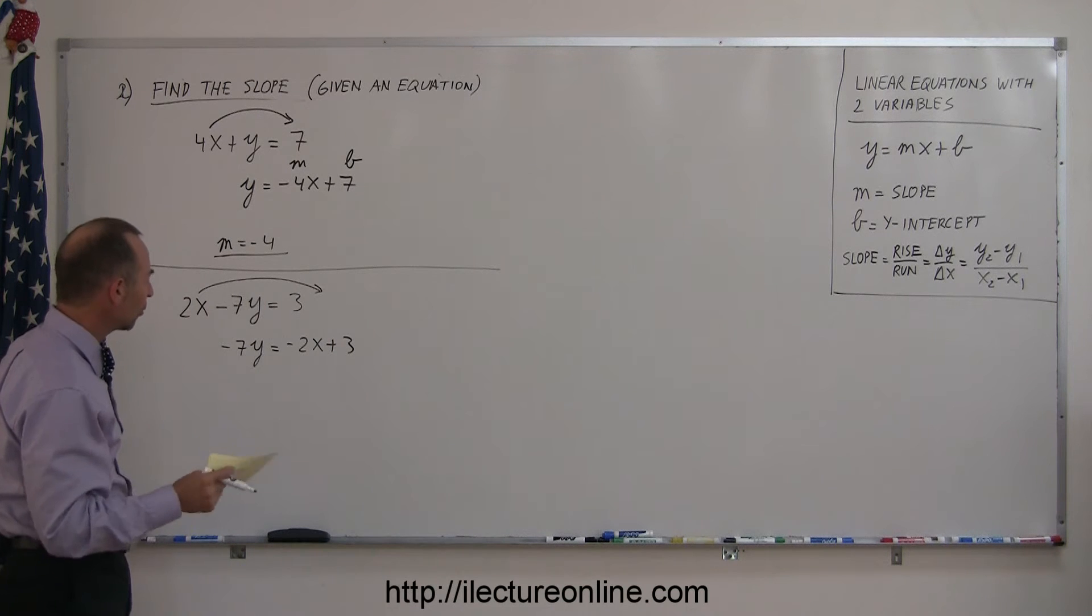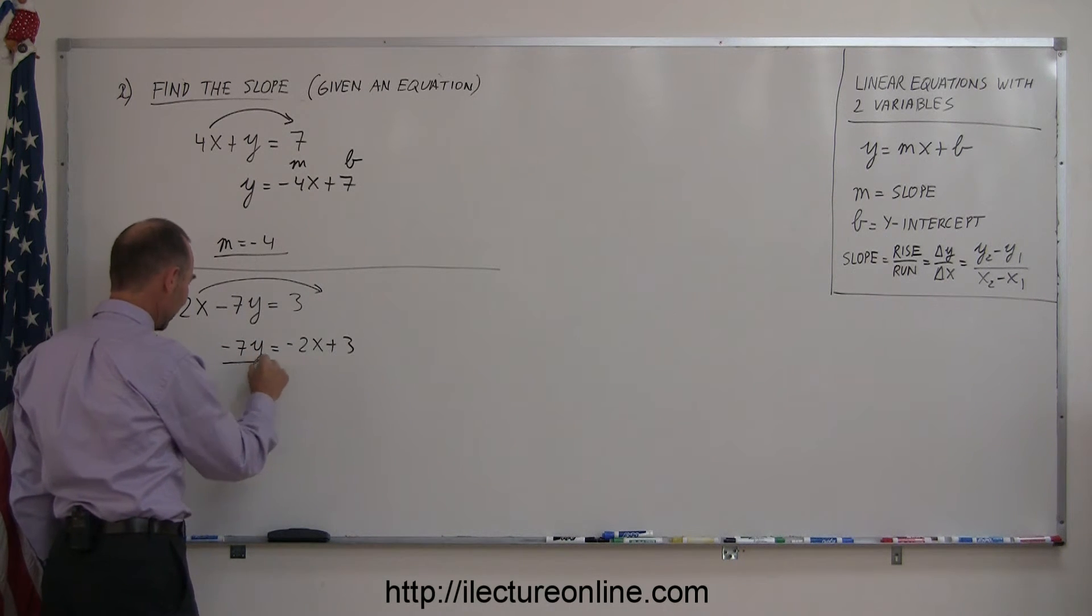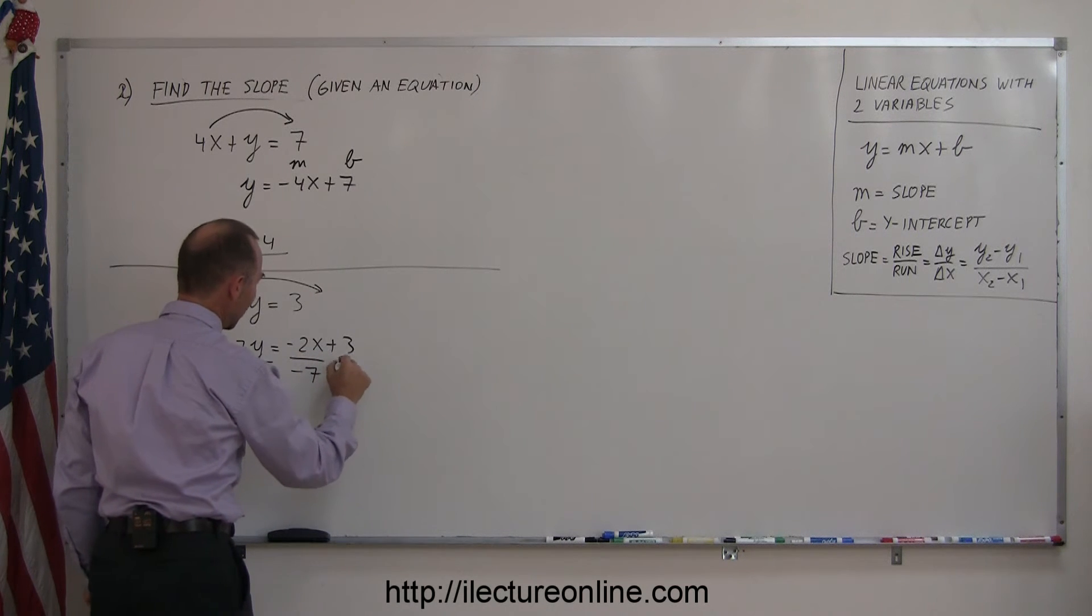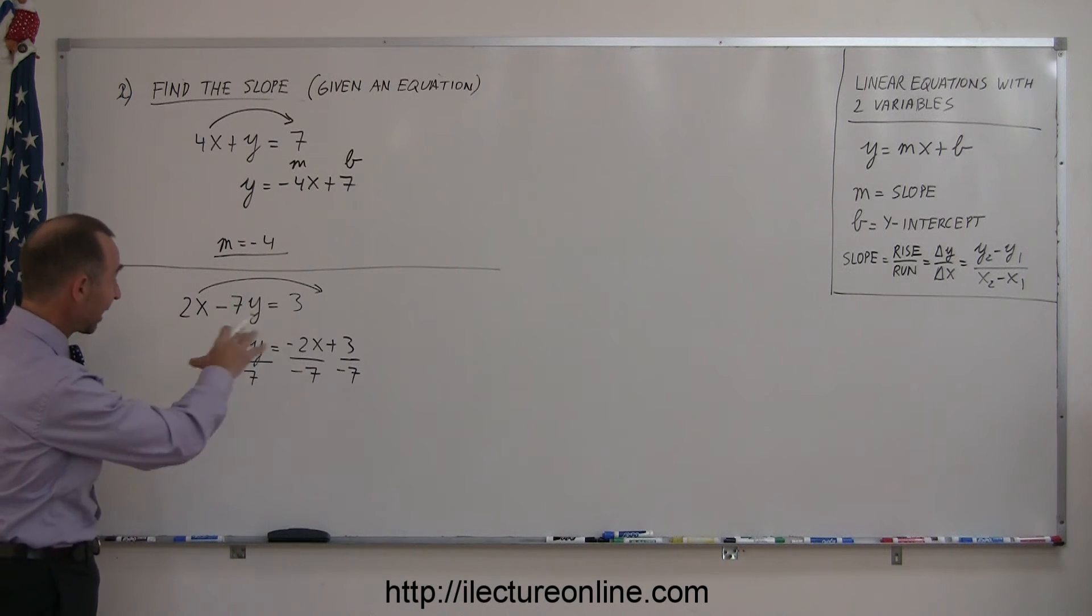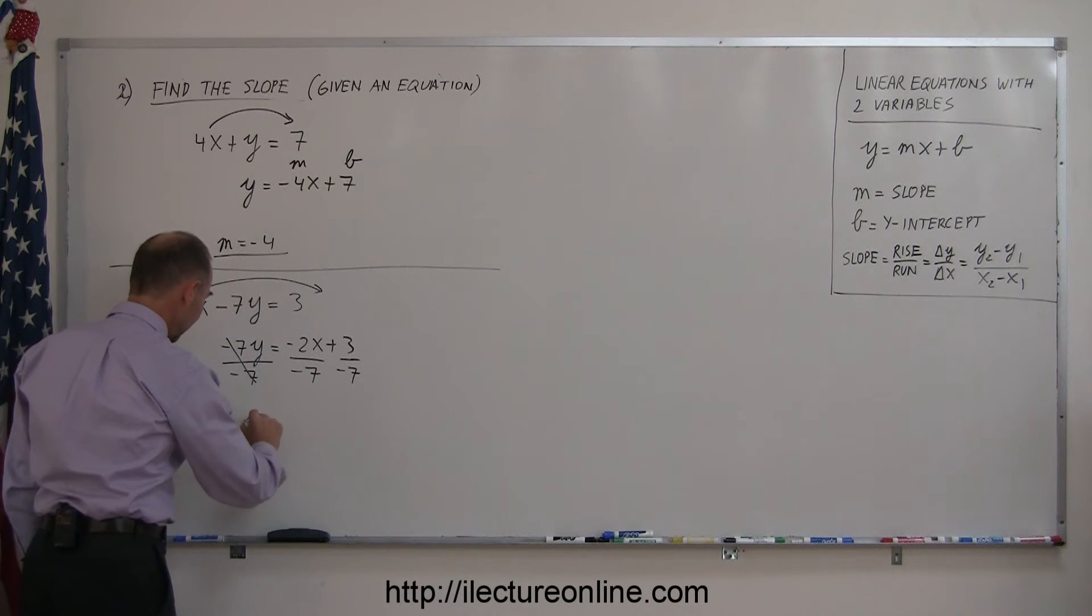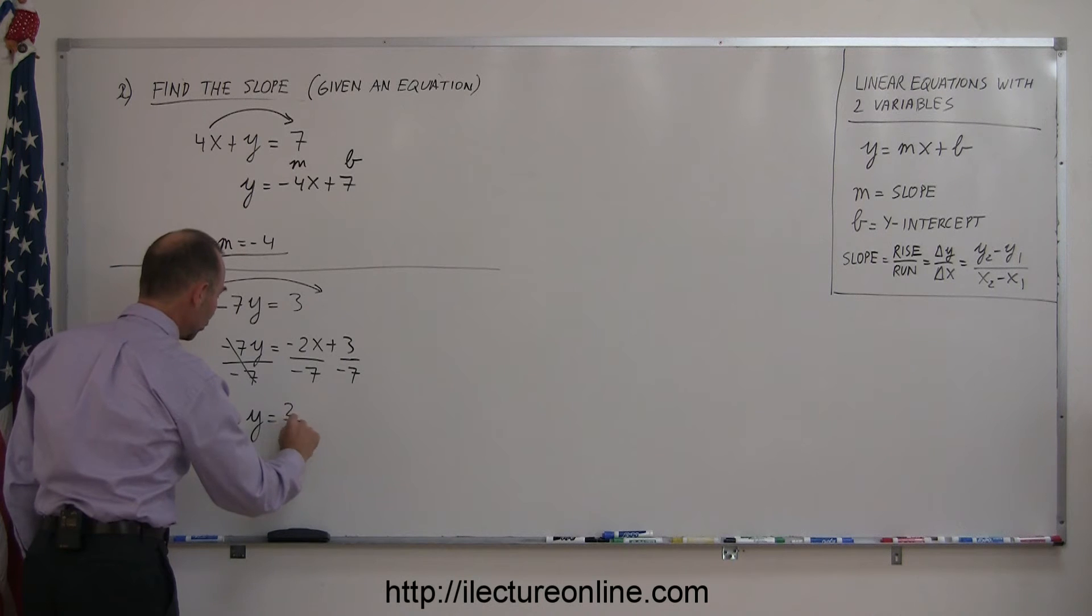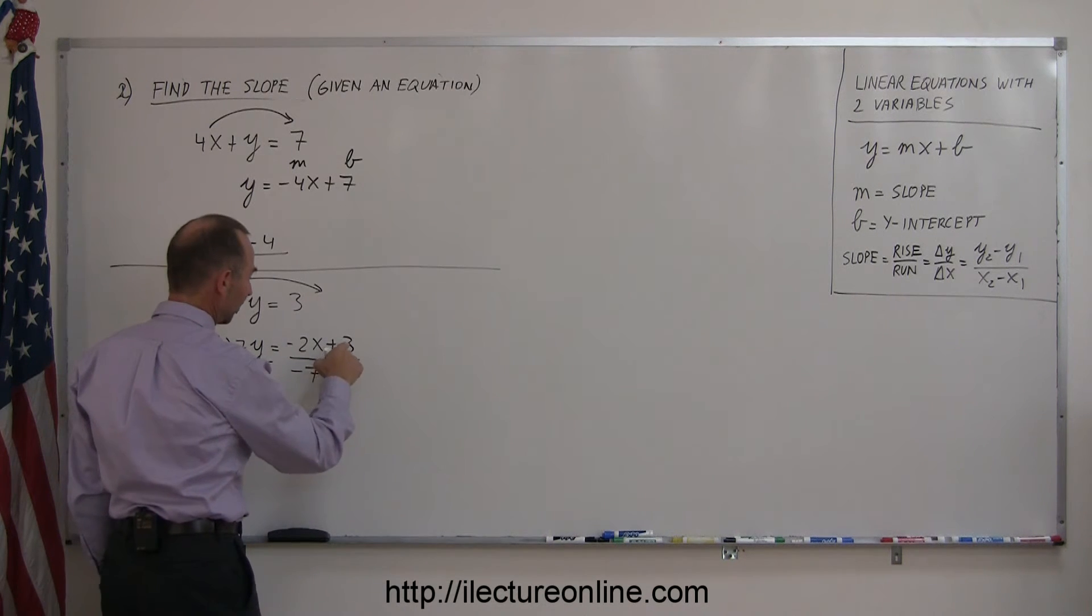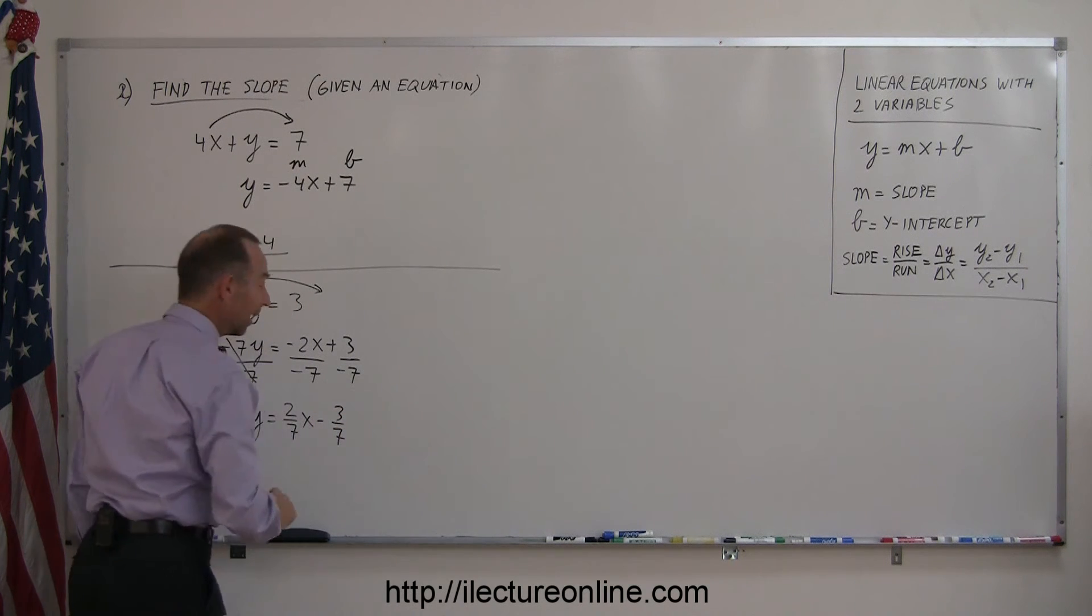Ha! That means we want to divide both sides of the equation by the numerical coefficient of y. So divide the left side by minus 7 and divide each term on the right side by minus 7. Remember, whenever you do the left side of an equation, you must do exactly the same on the right side. The negative 7s cancel out, so now you end up with y equals negative 2 divided by negative 7, which is 2/7ths x because the negatives cancel out, and positive 3 divided by negative 7 is minus 3 over 7. And now you're done.